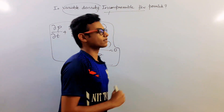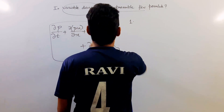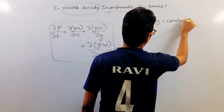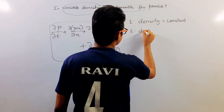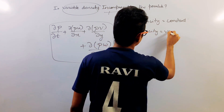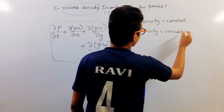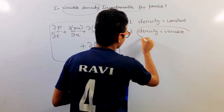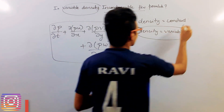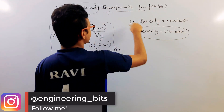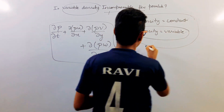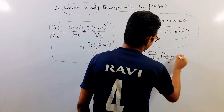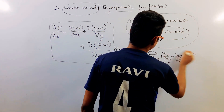Let us consider two cases. The first case is density is equal to constant, and the second case is density is variable. The purpose is that incompressible flow must be possible in the case of variable density. In both cases, the flow is incompressible — that is, del u by del x plus del v by del y plus del w by del z is equal to zero must be satisfied.